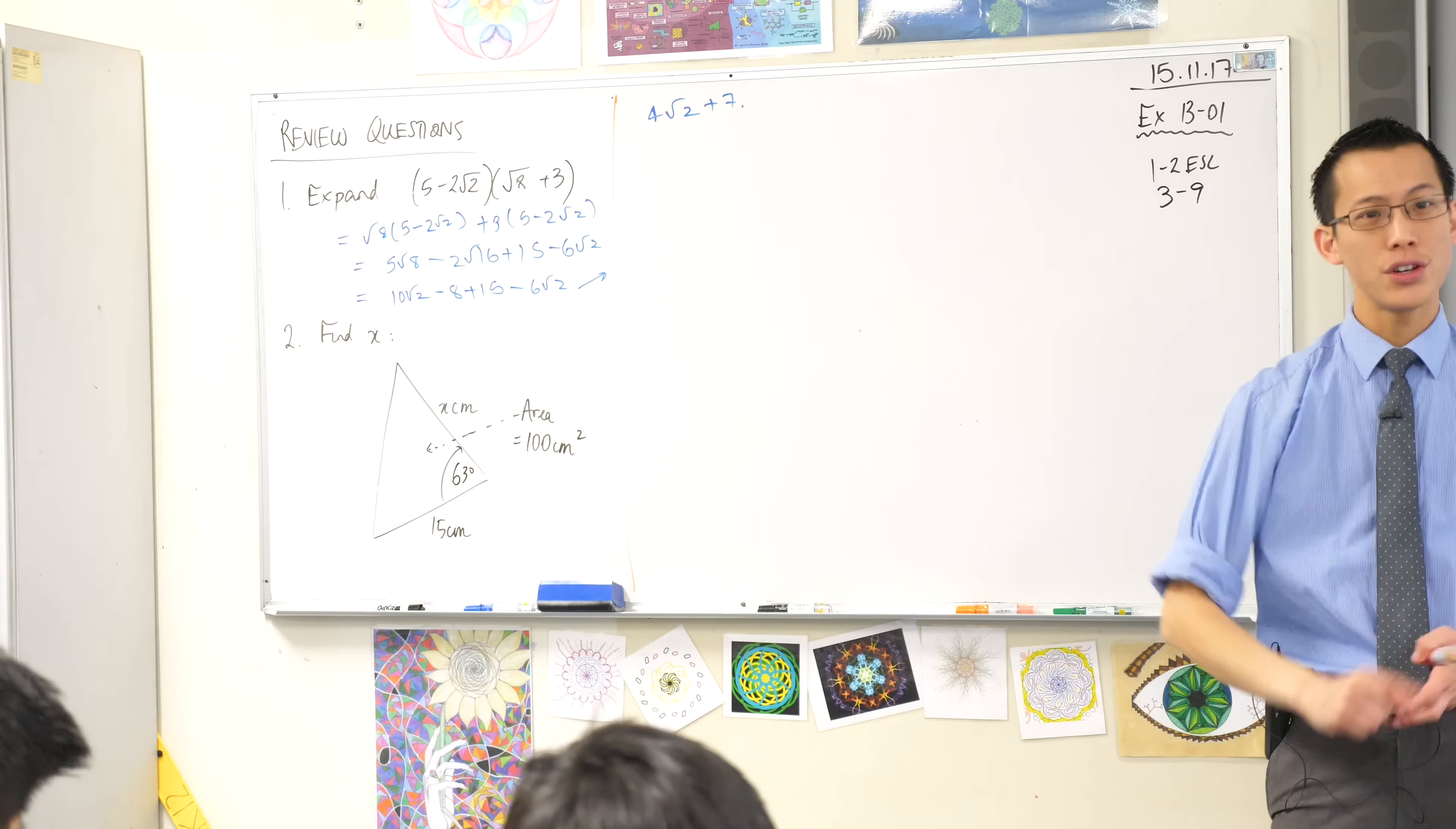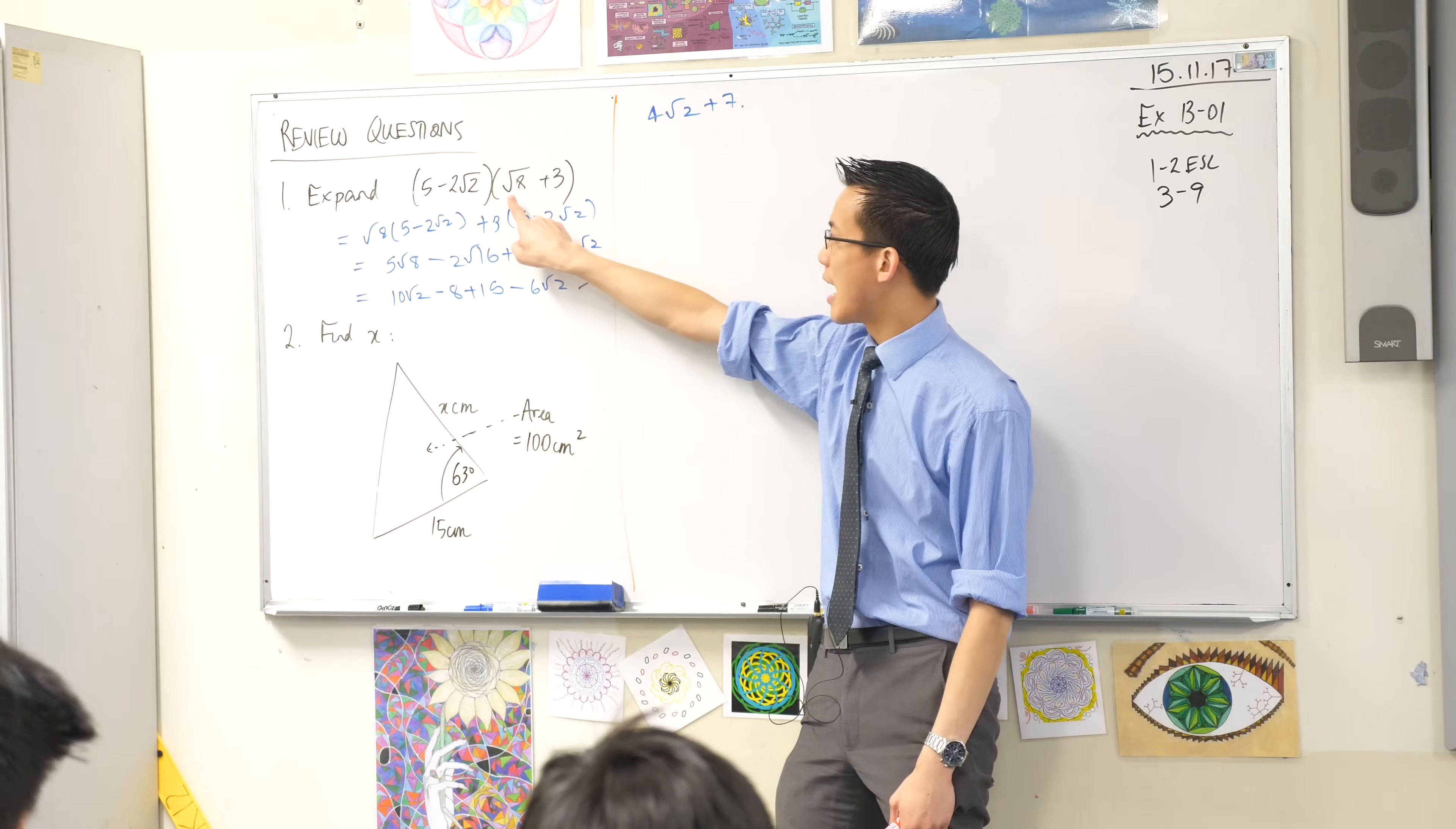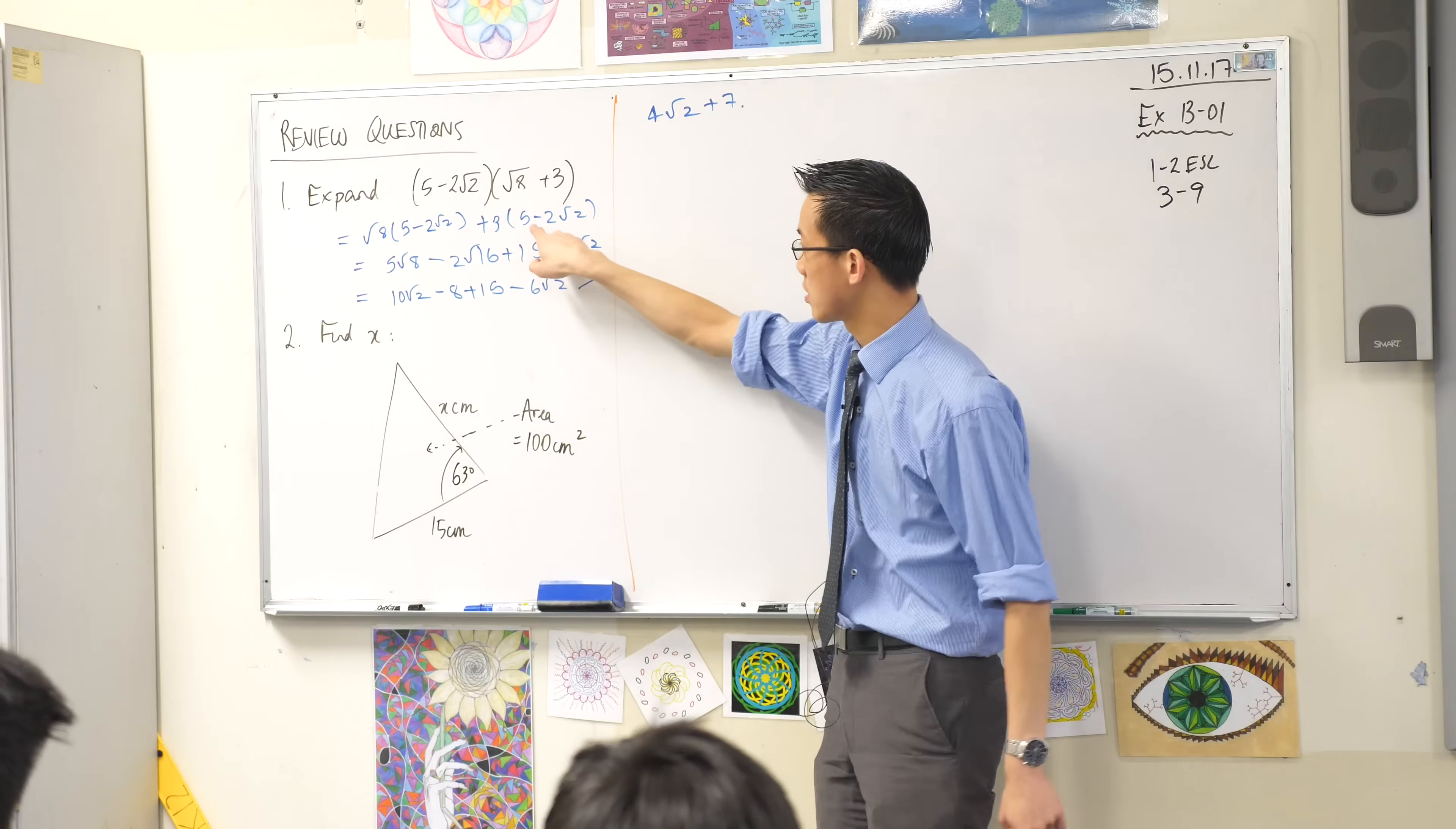He's expanded, very good, and he's done that in two stages. He said okay, what this means is I want to have square root of 8 lots of this and I want to have 3 lots of this. I do both of them, so that's what this line is about.